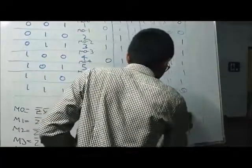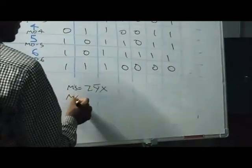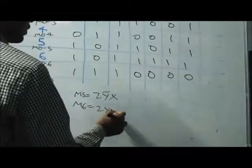What are 2? Z bar, Y, X bar. What are 3? Very good. Z bar, Y, X. Next. What are 4? Z and Y bar, X bar. Next. What are 5? Z. Y bar, X bar. X. What are 4? Z. Y bar, X. 6. Z. Z. Y, X bar. Yes sir.